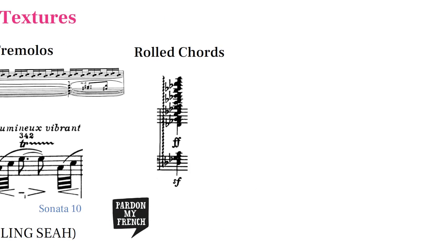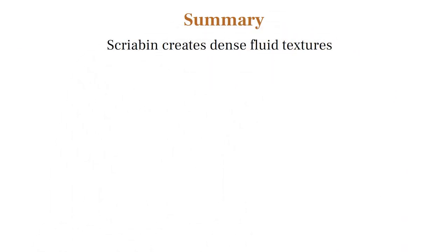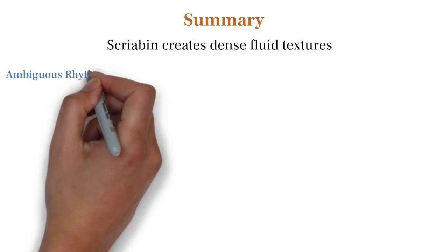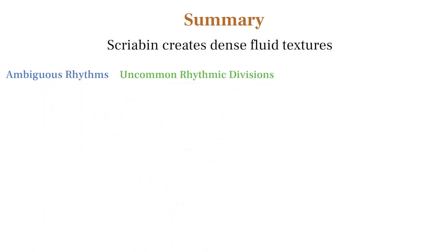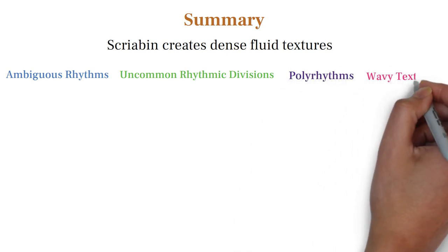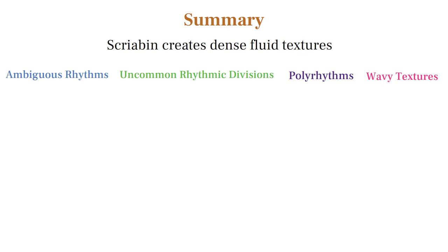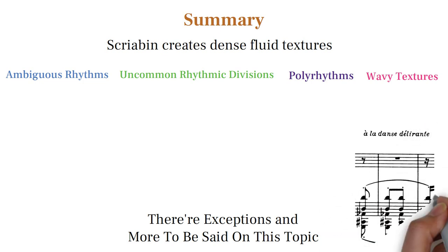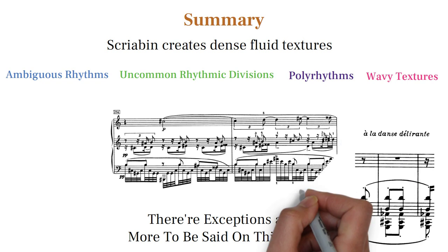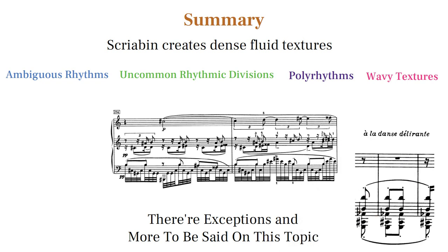In summary, Scriabin creates dense textures that obscure the beat to create a fluid aesthetic. He uses techniques like ambiguous rhythms, uncommon divisions of the beat, polyrhythms, and trills performed in a free rubato-romantic style. He of course deviates from this sometimes with steady rhythms like the dance motif discussed previously, but for the most part he uses busy overlapping textures to create his unique sound.